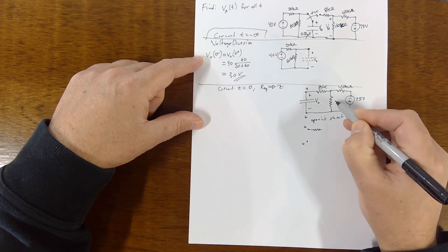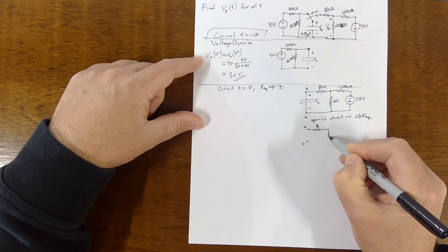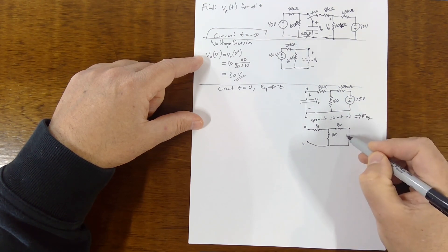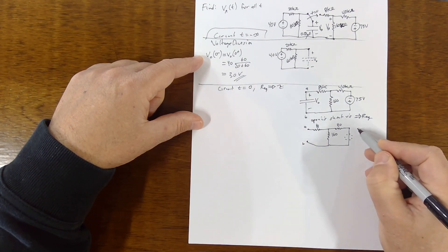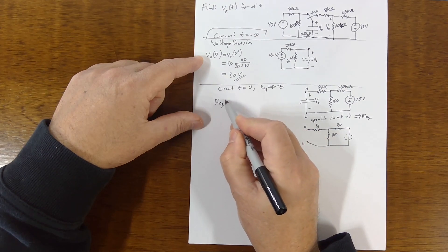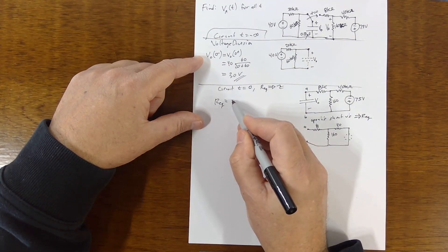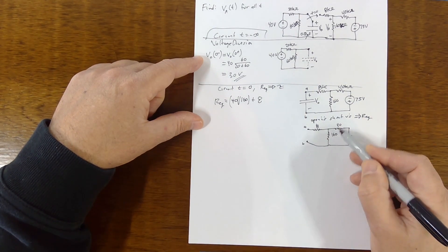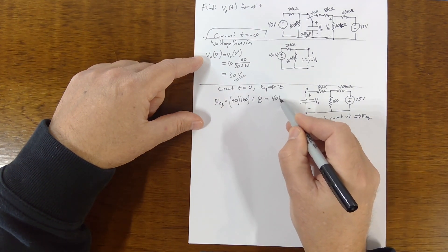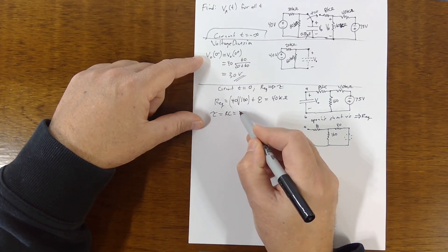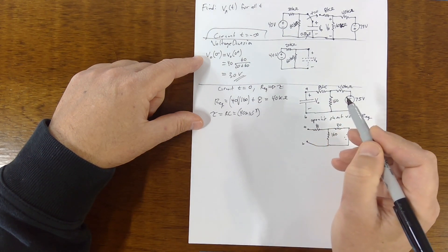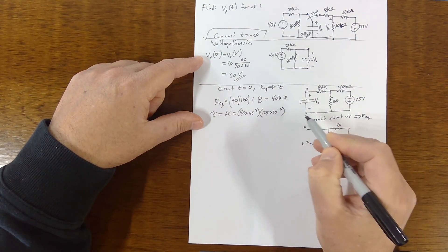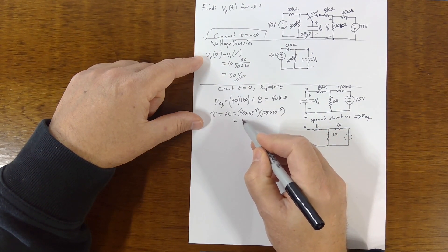With terminals AB identified, we have a 160 kilohm and a 40 kilohm resistor, and we short the voltage source. The equivalent resistance is 40 kilohms in parallel with 160 kilohms, and that in series with 8 kilohms, giving 40 kilohms total. So tau equals RC: 40 times 10³ times 0.25 microfarads equals 10 milliseconds.